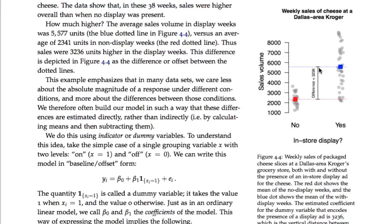That's exactly what a dummy variable does. It presents information about group means in terms of a baseline category and then the offset to another category. The simplest reason we do this is that in statistics we're often interested in differences — making comparisons between two conditions. If we use dummy variables to encode grouping information, the parameters we're estimating exactly correspond to the differences we care about. To a marketer, that's the quantity of interest: what's the advantage of the in-store display compared to not having one?